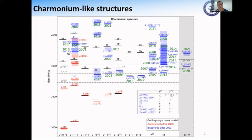X(3872) is now also called chi_c1(3872) because of its quantum numbers: 1++ for J^{PC}. Since then, many other states have been observed in various experiments, including LHCb, BaBar, BESIII, and others. A very prominent feature is that many of them are close to some open-charm thresholds. For instance, X(3872) is located almost exactly at the D*0 D0 threshold within uncertainty. Also X_c(3900) is around the threshold of D D*, and X_c(4020) is around the threshold of D* D*.